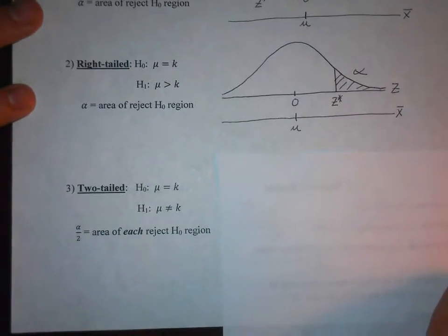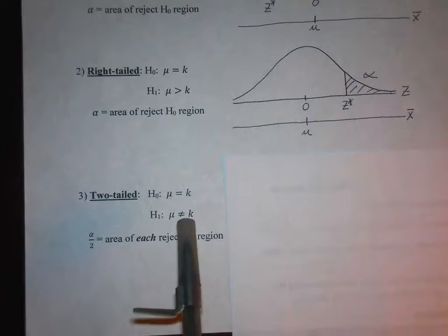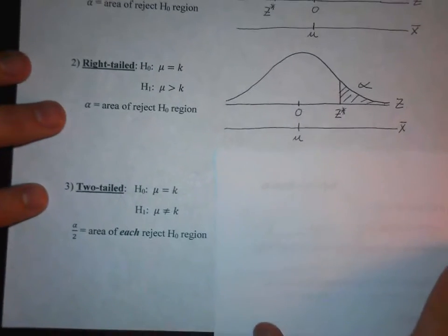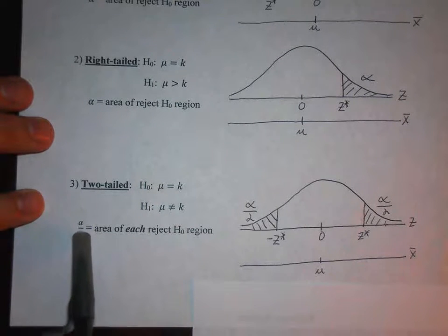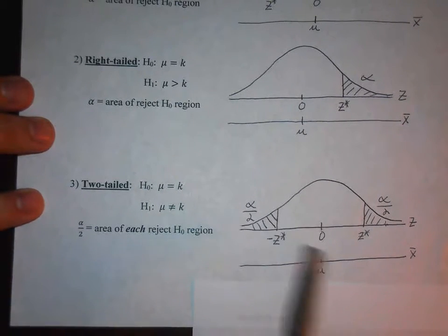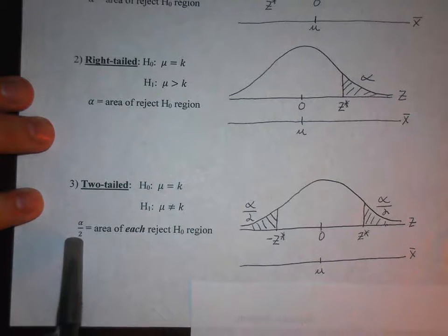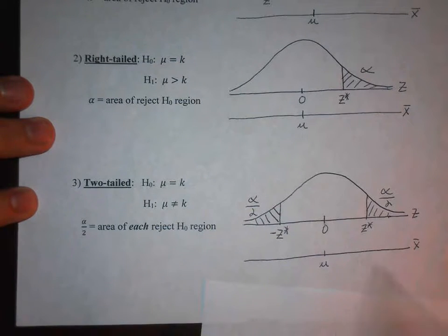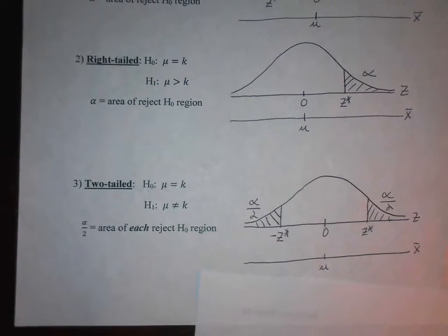For a two-tailed test, the alternative hypothesis is a not equals. Not equals means that we could be on either side of mu equals k, so we shade both ends. The difference is we have alpha over 2, because we have two tails to split the total probability of alpha. For example, if alpha is 0.1 or 10%, you divide by 2 to get 0.05 or 5% in both tails. And you'll have the same z-score magnitude, except one is positive and one is negative, because of the symmetry of a normal curve.